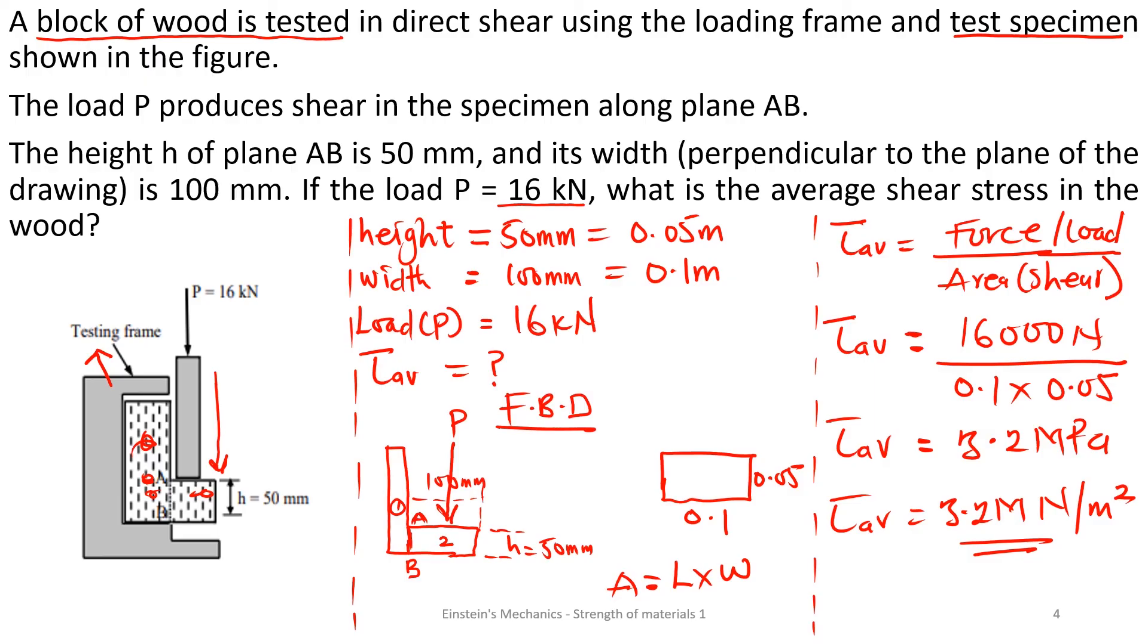Now, looking at the diagram, they are giving us a clue on the test frame. Inside it, we have the wood. We are also given another clue that the specimen is along a plane AB. And here too, we have the plane AB given. So with all those parameters, it is likely for you to understand and get the meaning.